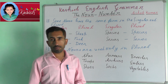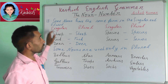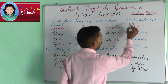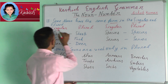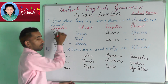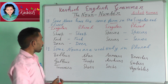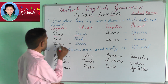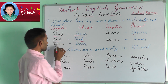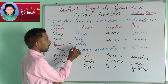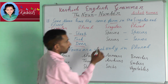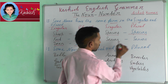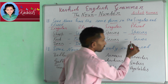Twelfth rule: some nouns have the same form in the singular and plural. For example: sheep → sheep, fish → fish, deer → deer, species → species, series → series.